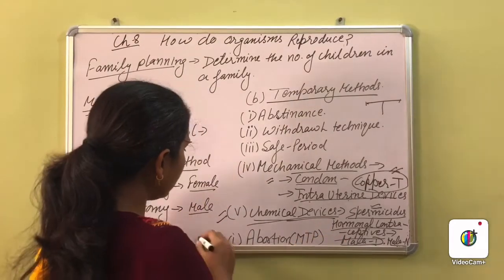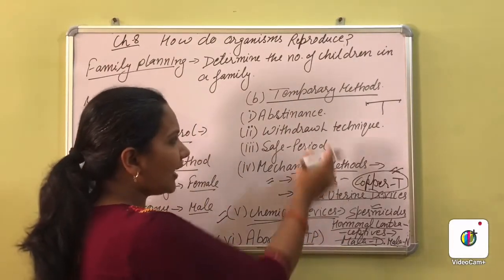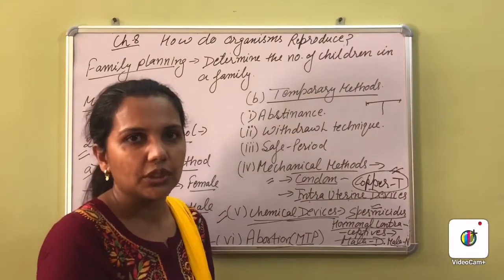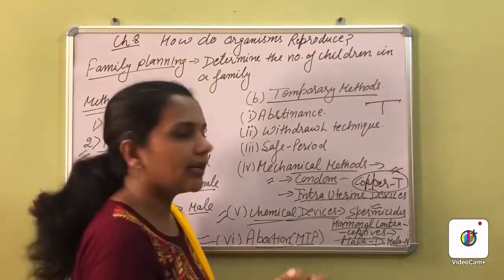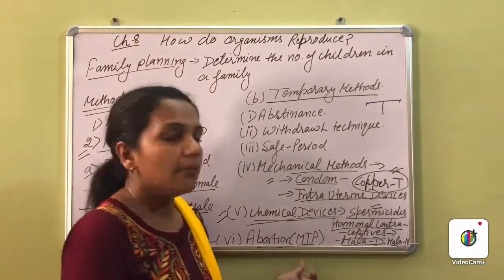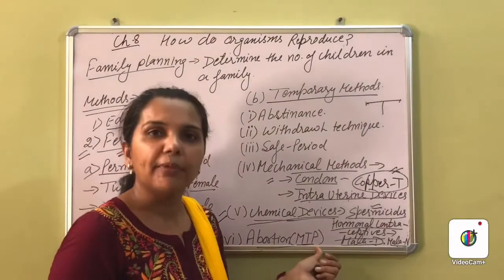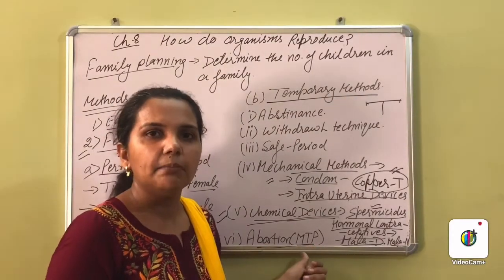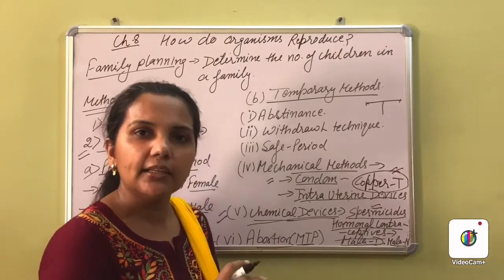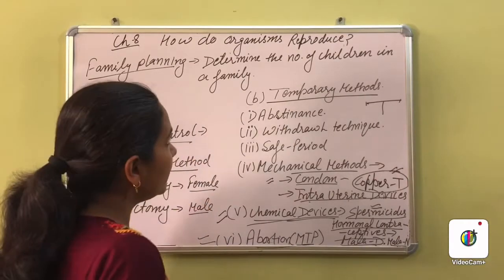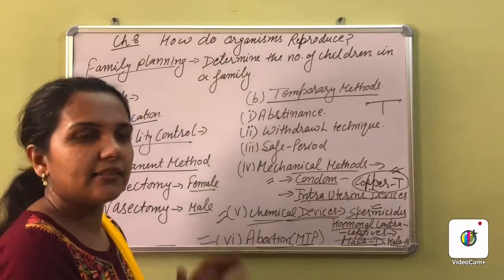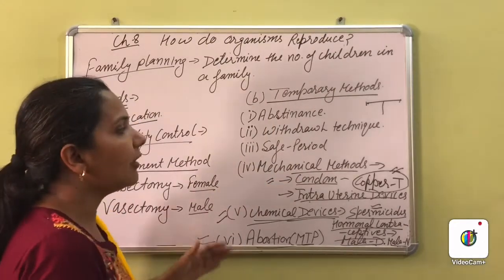The last method is abortion — Medical Termination of Pregnancy, MTP. If pregnancy has occurred and needs to be terminated, this is the method used. So these are all the methods of family planning we can use to carry out family planning.